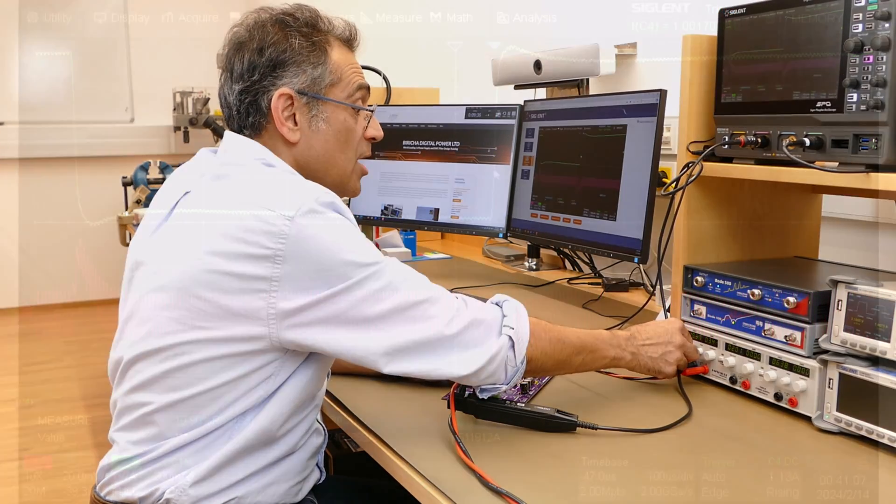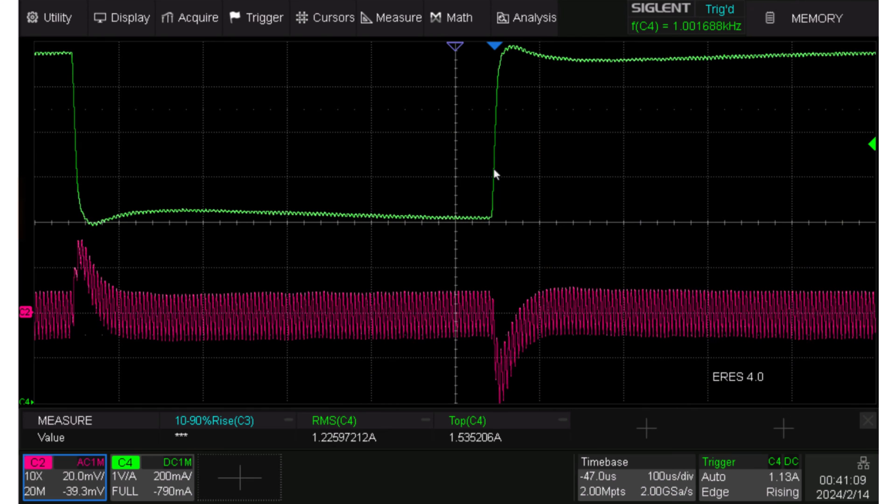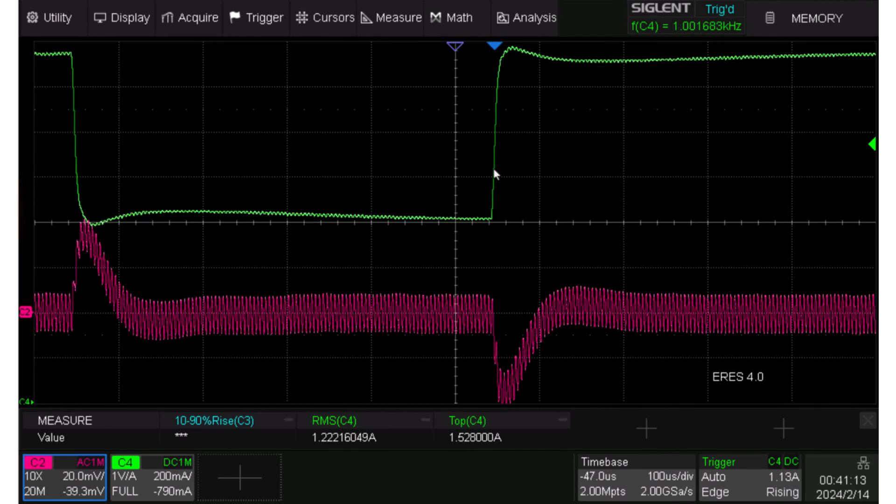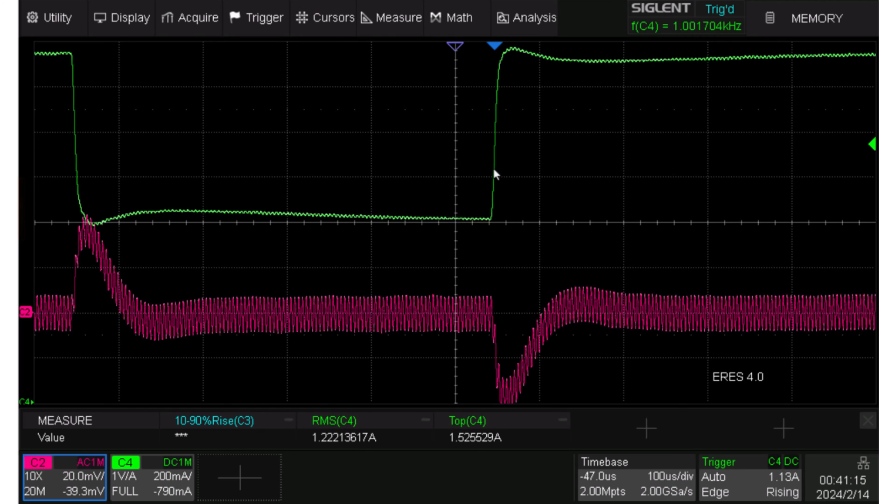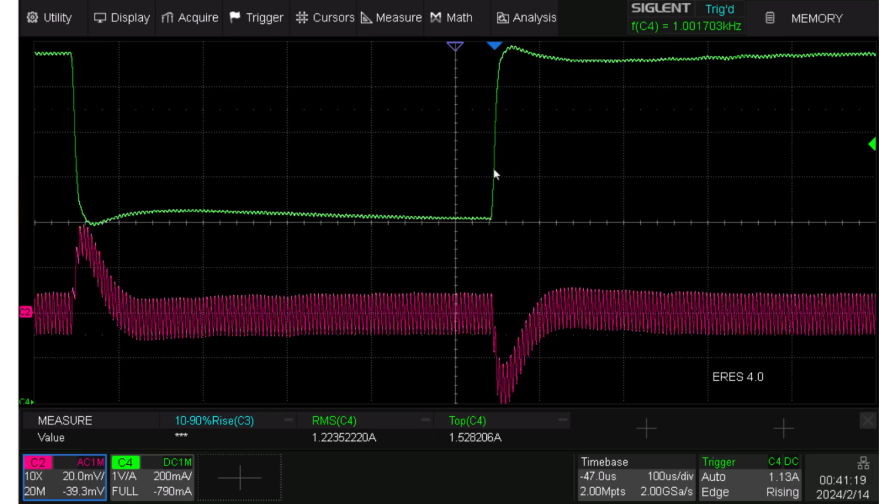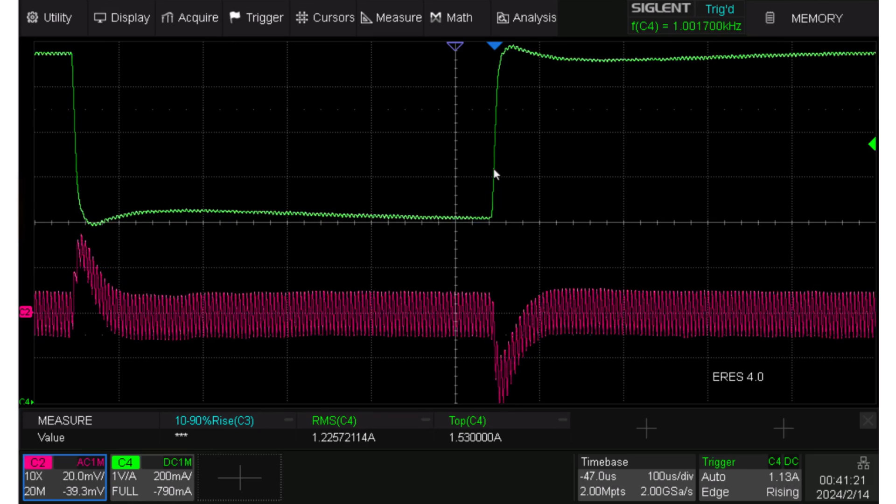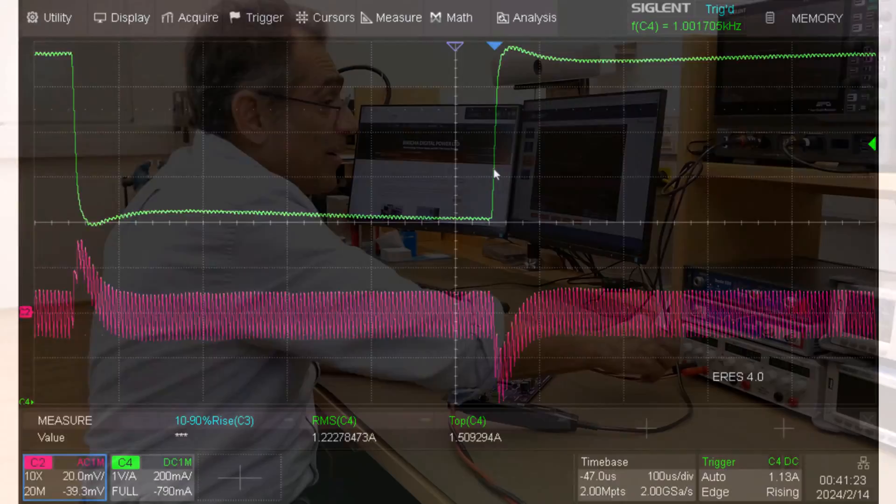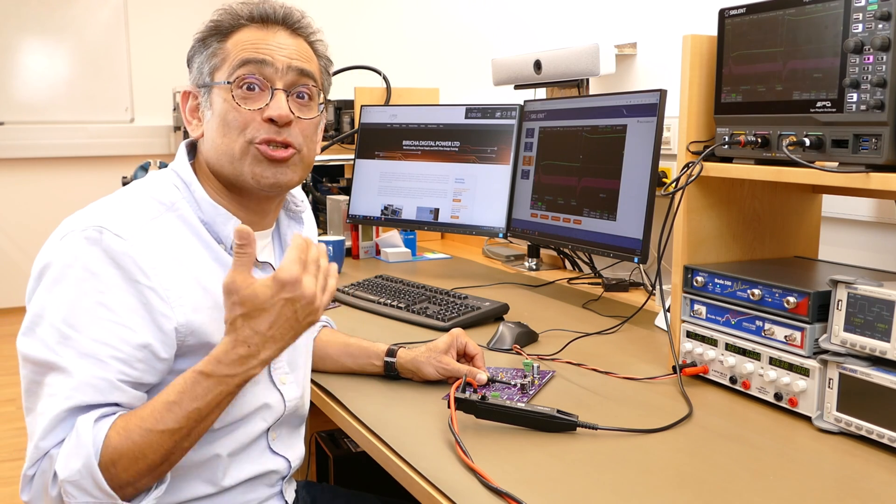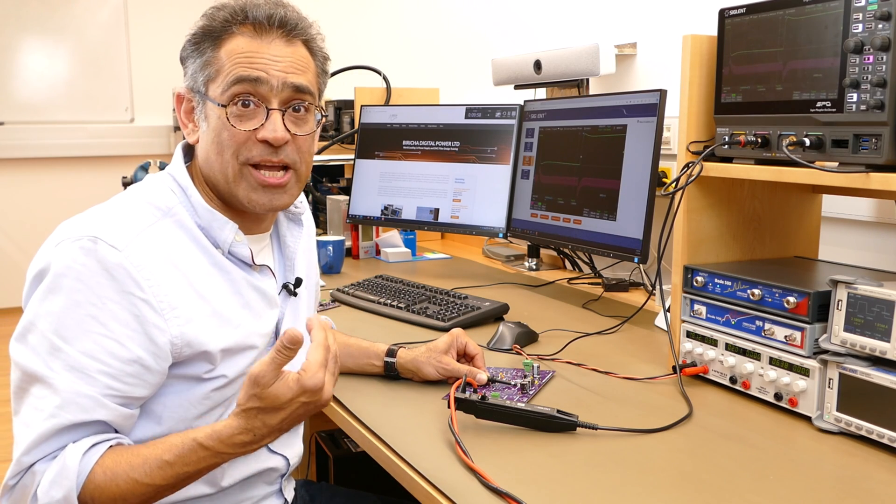Let's do that one more time. I'm going to reduce the input voltage down to around 10 volts and you should see on the oscilloscope that it's going to slow down. Clearly you can see that's happening and then I'm going to increase the input voltage and again you can see that it speeds up and of course this is completely consistent with the loop measurement that we did which showed that the crossover frequency changed.